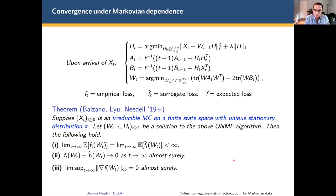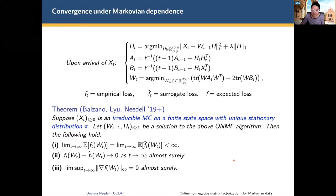A clarifying question: the previous result by Mairal and collaborators holds in the redundant dictionary case, and this setting appears to be that of a low-rank matrix decomposition, where the number of columns is lower than the dimension of the data. Does this result hold in the redundant case as well? Yes, it does — it's the same thing.